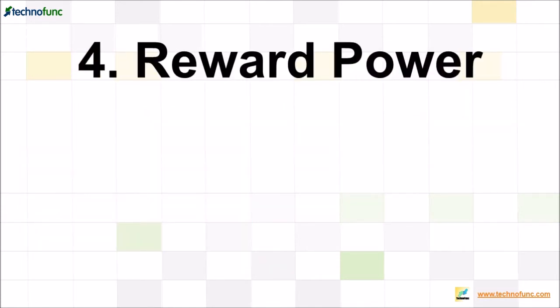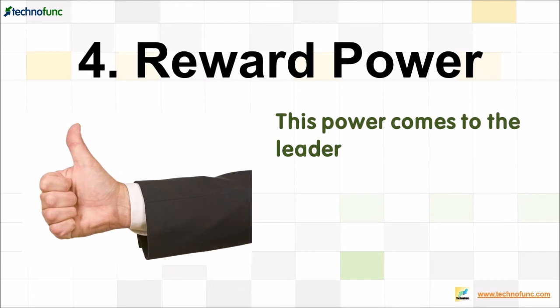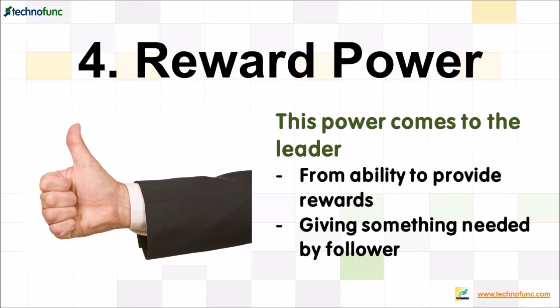The fourth type of power is reward power. This power is the present or potential ability to reward for worthy behavior, based on the leader's ability to provide rewards — real or intrinsic. The superior or the leader has the power to give tangible rewards such as promotion, office space, time off from work, attractive work assignments, and help to the subordinate. Also, psychological rewards like praise, appreciation, approval, and recognition can be given by the leader to the subordinate. The subordinate has to believe that the leader has access to higher authorities; therefore, the leader can give rewards. This reward power can also increase the leader's charismatic and legitimate power.